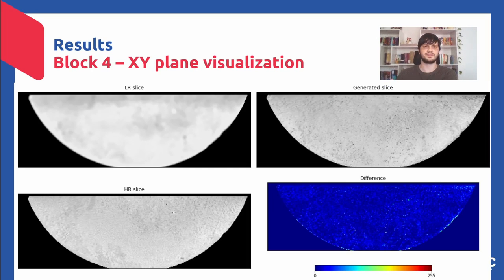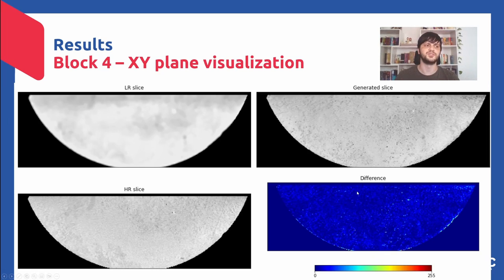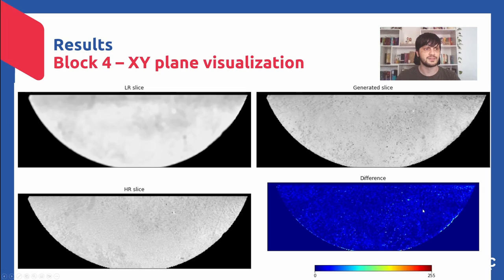We can see an XY slice of block four. It is easier to see the improvement here. The difference between the generated and high resolution slice drifts around a darker blue color for the majority of the slice, meaning there is a very low difference between the two. The lighter green on the borders and on the dense minerals indicates a higher difference between both slices.